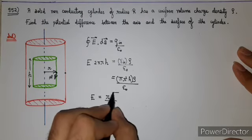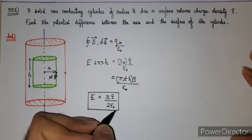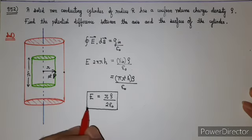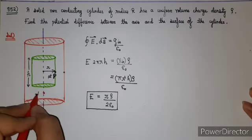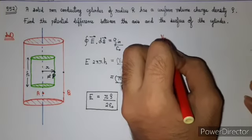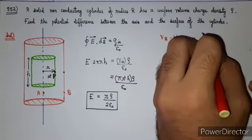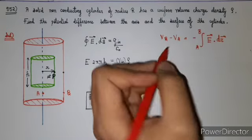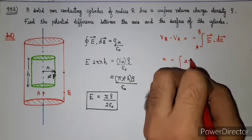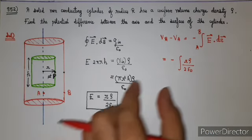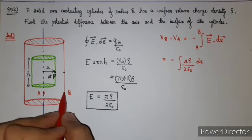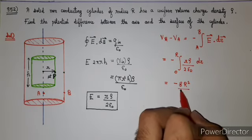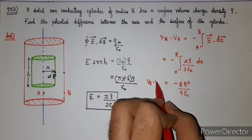If the cylinder is positively charged, this field points radially outward. Using the relation between field and potential, V_b minus V_a equals minus the integral of E dot dr from a to b. Substituting the electric field rho r by 2 epsilon not and integrating from 0 to capital R, we get minus rho R squared by 4 epsilon not. This is the potential difference between the axis and the surface.